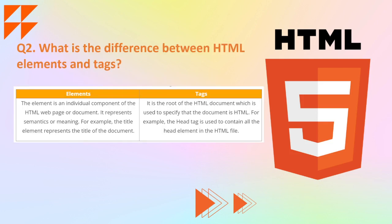Moving on to the next question: what is the difference between HTML elements and tags? This is one of the most important interview questions because many times people get confused between these terms and use them interchangeably. An element is an individual component of the HTML web page or document — it represents semantics or meaning. For example, the title element represents the title of the document. A tag, on the other hand, is the root of the HTML document used to specify that the document is HTML. For example, the head tag contains all the head elements in the HTML file.